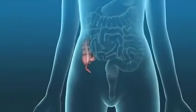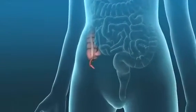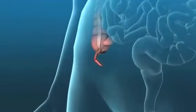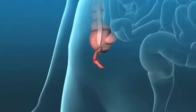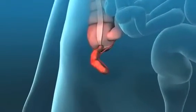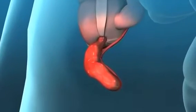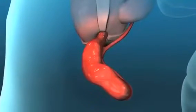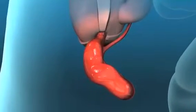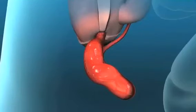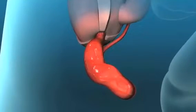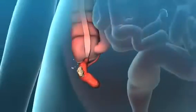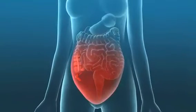The appendix is a small, hollow pouch attached to your large intestine. Fecal matter, inflammation, or other causes of obstruction can block the opening of the appendix, leading to a dangerous bacterial infection called appendicitis. An inflamed appendix can rupture and spread infection inside your abdominal cavity.